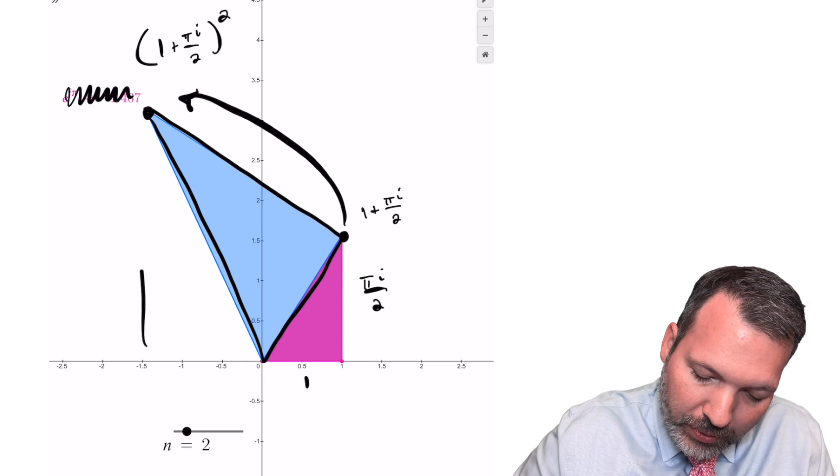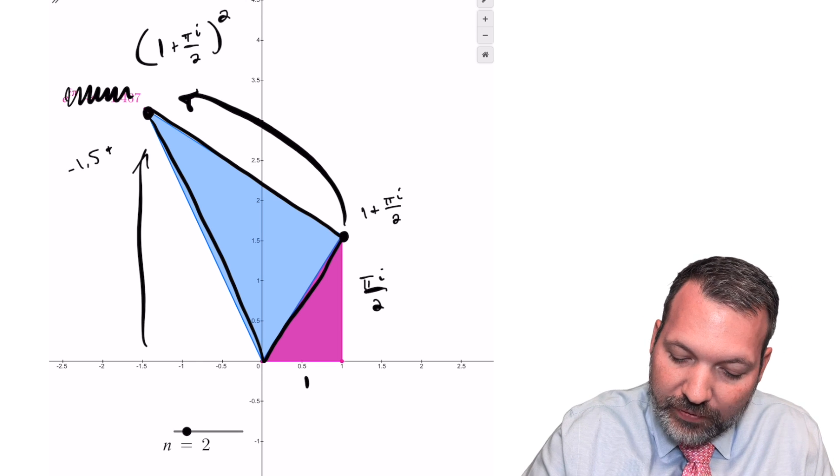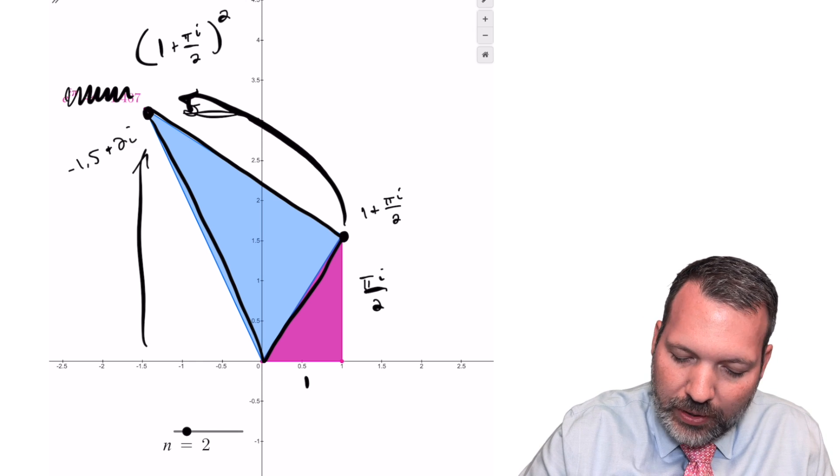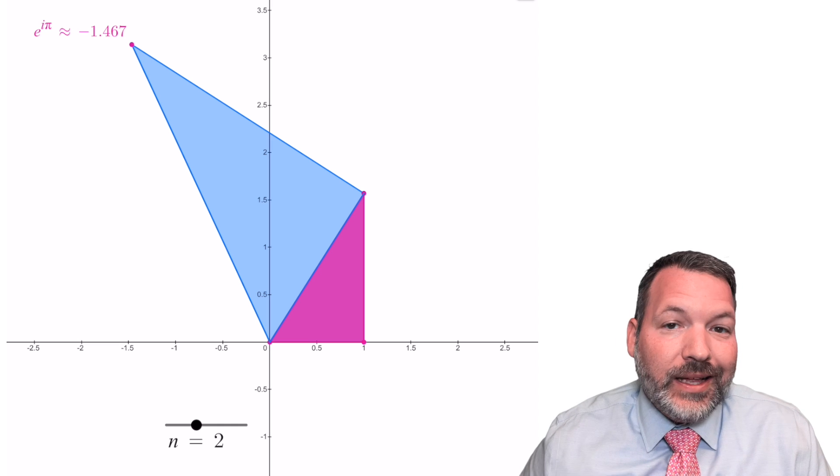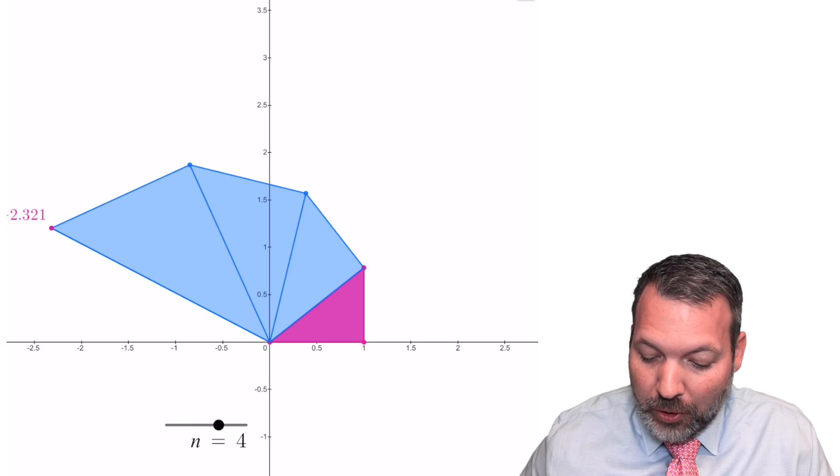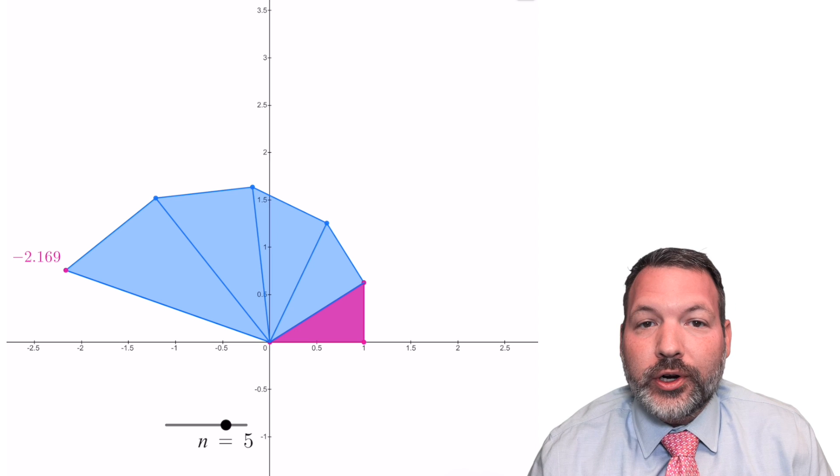You can ignore this for just a second because it looks like this would have like real part roughly negative 1.5, and then imaginary part something like two-ish. E represents an exponentiating process, and so what we want to do is actually perform these triangles coming up with more and more similar triangles over and over and over again.